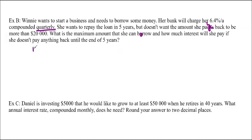So, basically, N is going to be equal to 5 times 4. She's not paying anything back, so it's not a complicated question. It's just that we know that she wants to have the amount be $20,000 maximum. And her interest rate is going to be 0.064 divided by 4 because of that quarterly business.